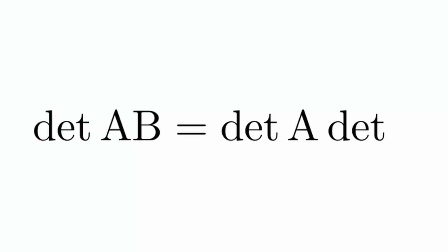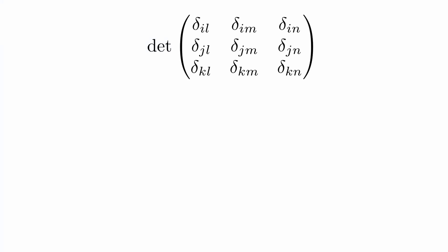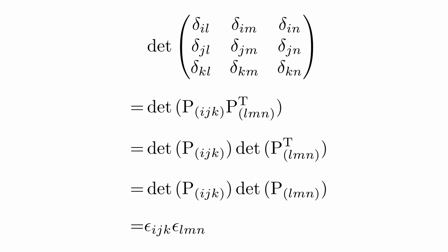We can now apply some of the properties of a determinant. If A and B are square matrices, then the determinant of A times B equals the determinant of A times the determinant of B. Also, the determinant of A transpose equals the determinant of A. So now we're ready to prove the main relationship: the determinant of this Kronecker delta matrix equals the determinant of P i,j,k times P l,m,n transpose, which equals the determinant of P i,j,k times the determinant of P l,m,n, which equals epsilon sub ijk times epsilon sub lmn.